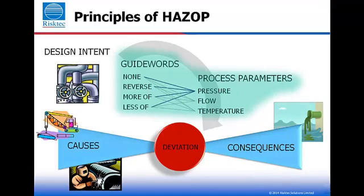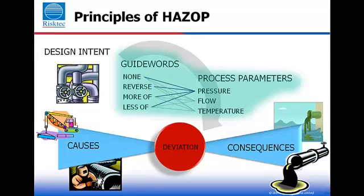What could cause these particular deviations? Why would this particular situation exist? If the deviation is allowed to proceed, what would the consequences be? The consequence may be a threat to safety, health, environment, financial assets, or an obstacle to the smooth operation of the system.